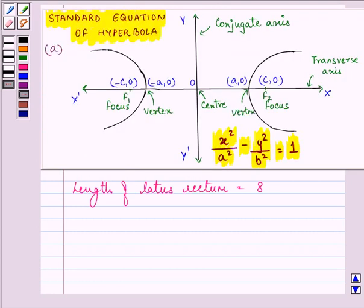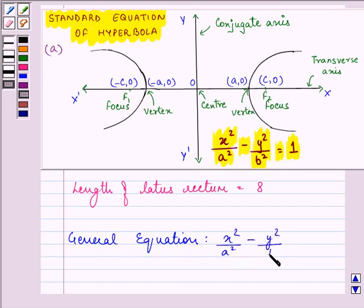therefore the general equation or the standard equation of hyperbola is x square by a square minus y square by b square equals 1.